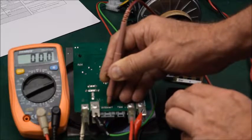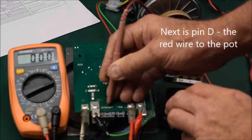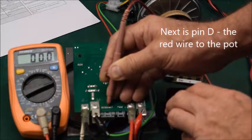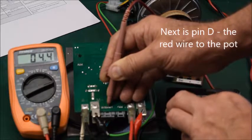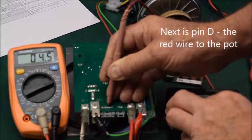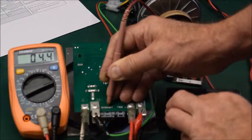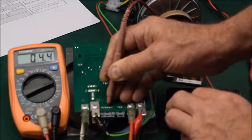Now we will check the pot wires. Move the meter lead to pin D which corresponds to the red wire. With the ignition off this should be zero. With the ignition on this should be around four to five volts. Write the values in the grey boxes on the sheet.